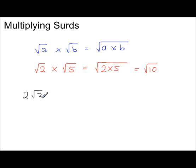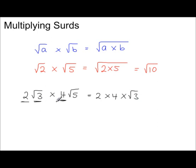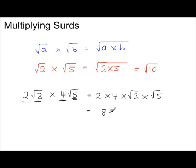For 2 root 3 times 4 root 5, we can rewrite this as 2 times 4 times root 3 times root 5. When you multiply numbers together, the order doesn't matter. So 2 times 4 is 8, and root 3 times root 5 gives root 15. All of this simplifies to 8 root 15.